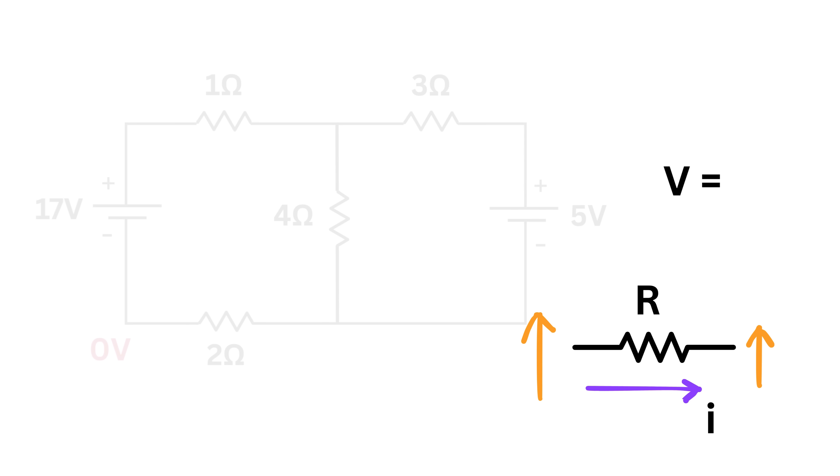For example, if a two ampere current flows through a five ohms resistor, it will eat five times two or ten volts. So if this node is at 15 volts, then this node will be at 15 minus 10 or 5 volts.